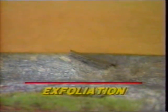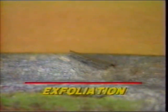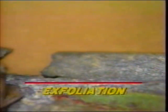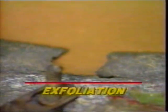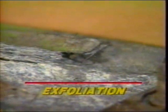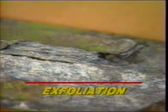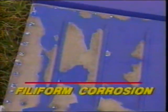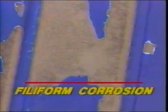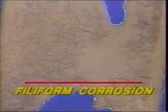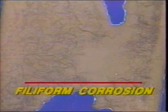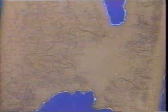Exfoliation corrosion is an advanced form of intergranular corrosion. The surface grains of a metal are lifted up by the force of expanding corrosion products occurring at the grain boundaries just below the surface. Filiform corrosion begins at breaks in the paint and is recognized by its worm-like traces beneath the paint surface, which can lead to intergranular corrosion.